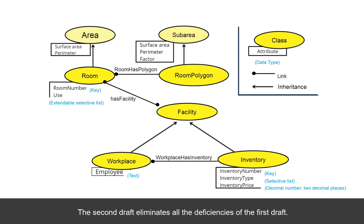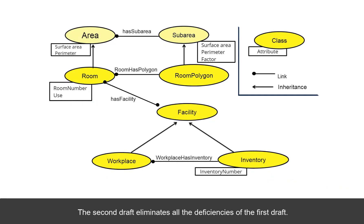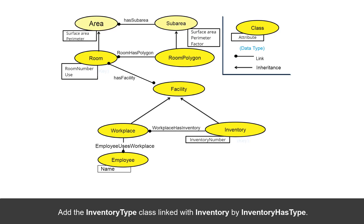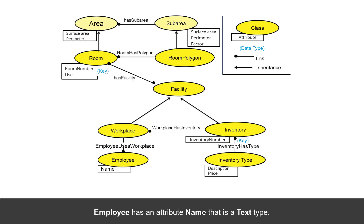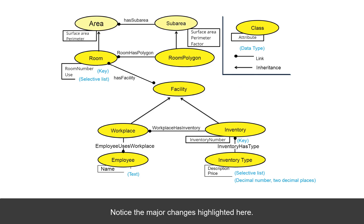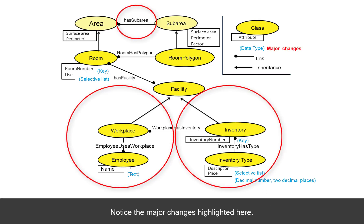The second draft eliminates all the deficiencies of the first draft. Add the employee class linked with workplace by employee uses workplace. Add the inventory type class linked with the inventory by inventory has type. Employee has an attribute name that is a text type. Inventory type has the following attributes: description is a selective list type and price is a decimal number type. Notice the major changes highlighted here.